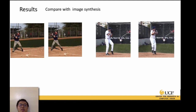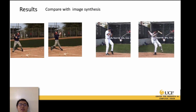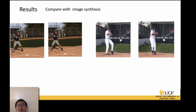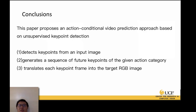In conclusion, this paper proposes an action-conditional video prediction approach based on unsupervised keypoint detection. First, they detect keypoints from an input image. Second, they generate a sequence of future keypoints for a given action category. Finally, they translate each keypoint and frame into a target RGB image. The main contribution is an unsupervised keypoint detector that is general and has no constraints on the dataset. Thank you, everyone.